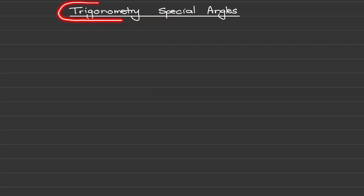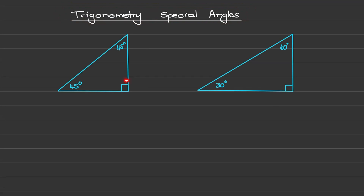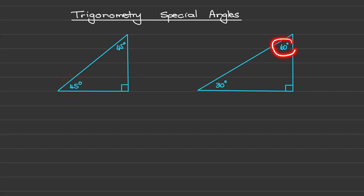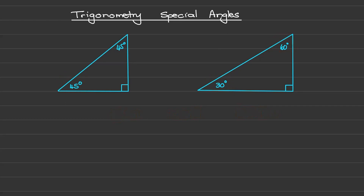In this video we'll discuss the special angles for trigonometry and we are going to use two different right-angled triangles to help us discuss the special angles of 45 degrees, 30 degrees and 60 degrees for all three trig ratios. Let us start with our first triangle.